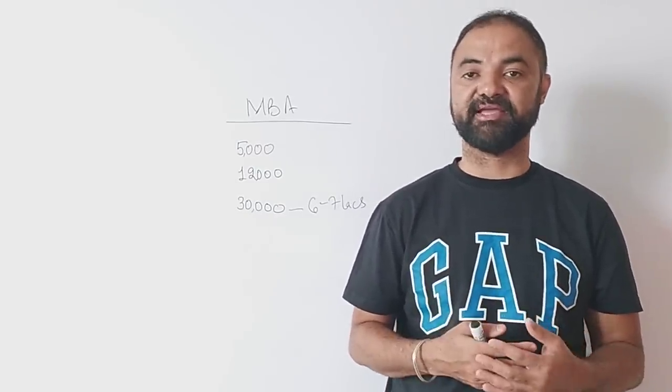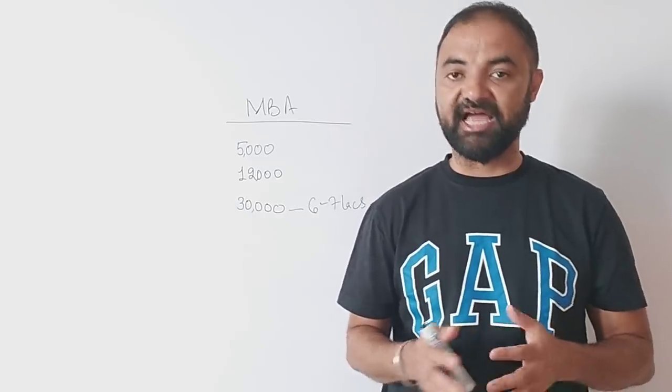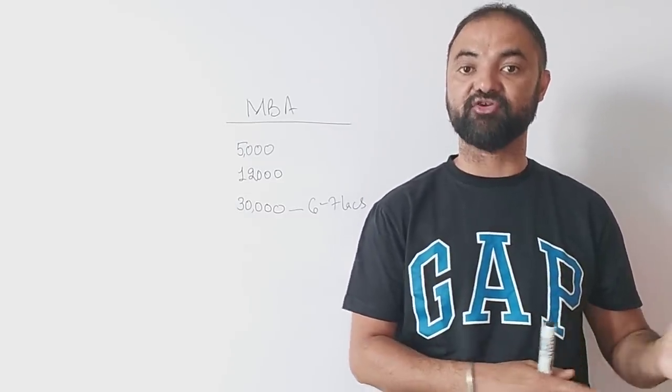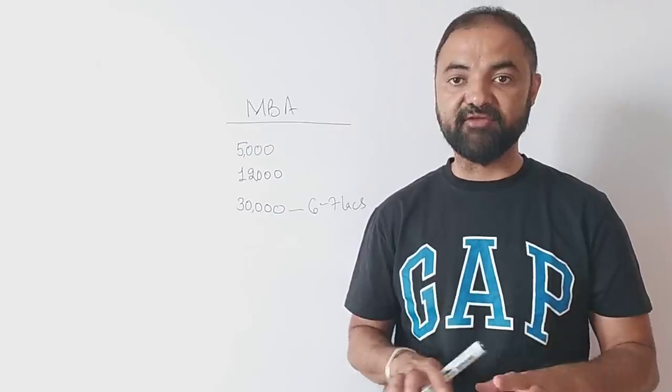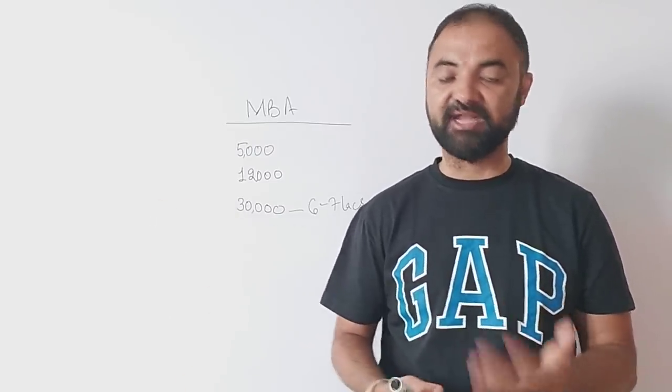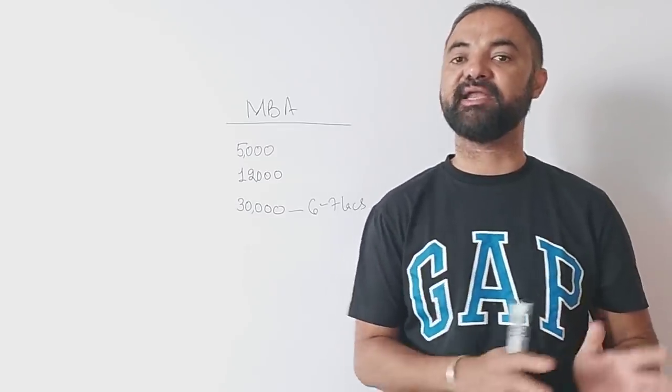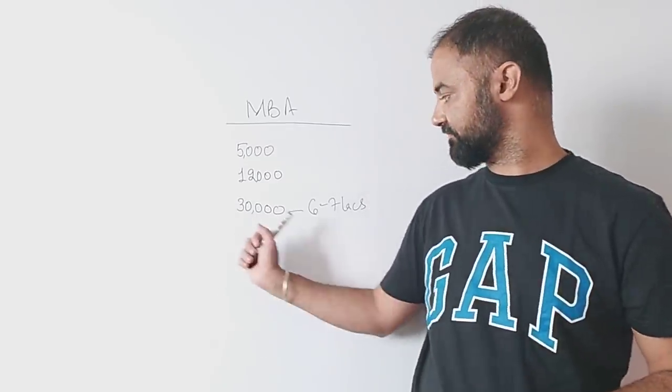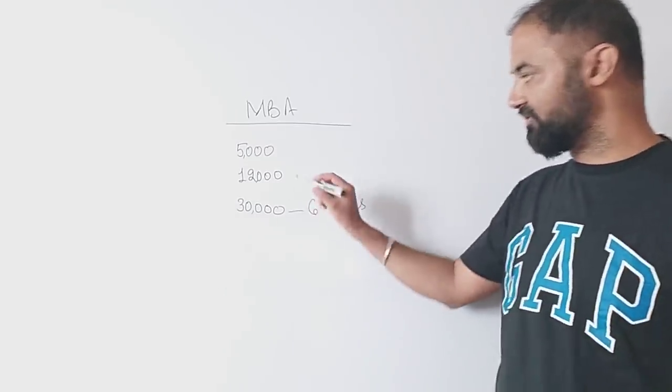This is starting package - 6 to 7 lakh is the average salary of an engineer from a top engineering college. So if you are in the top 30,000, you're in the top 10% of CAT students, getting an average salary of 6 to 7 lakhs.